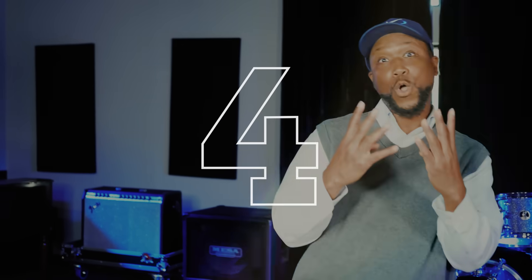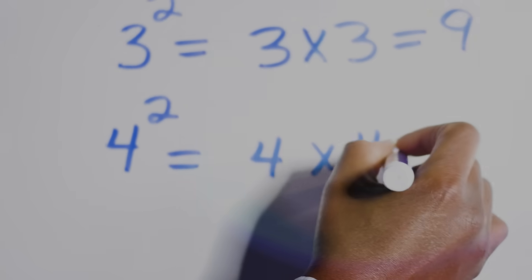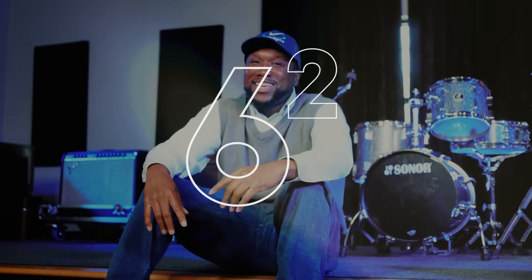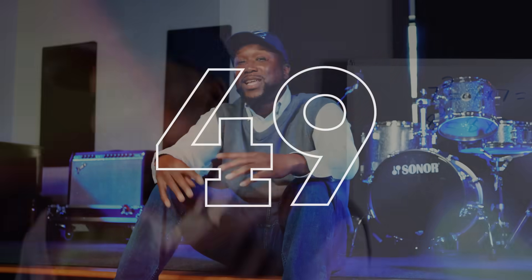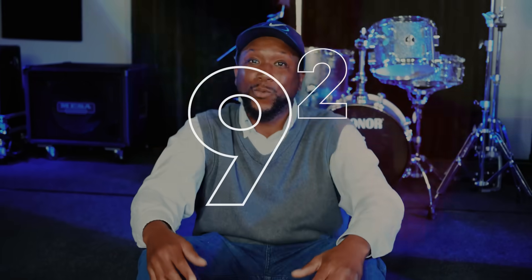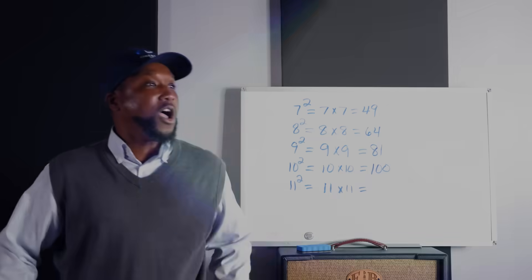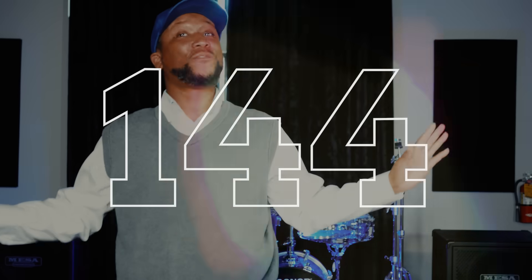One squared is one, two squared is four, three squared is nine, four squared is sixteen, five squared is twenty-five, six squared is thirty-six, seven squared is forty-nine, eight squared is sixty-four, nine squared is eighty-one, ten squared is one hundred, eleven squared is one twenty-one, twelve squared is one forty-four.